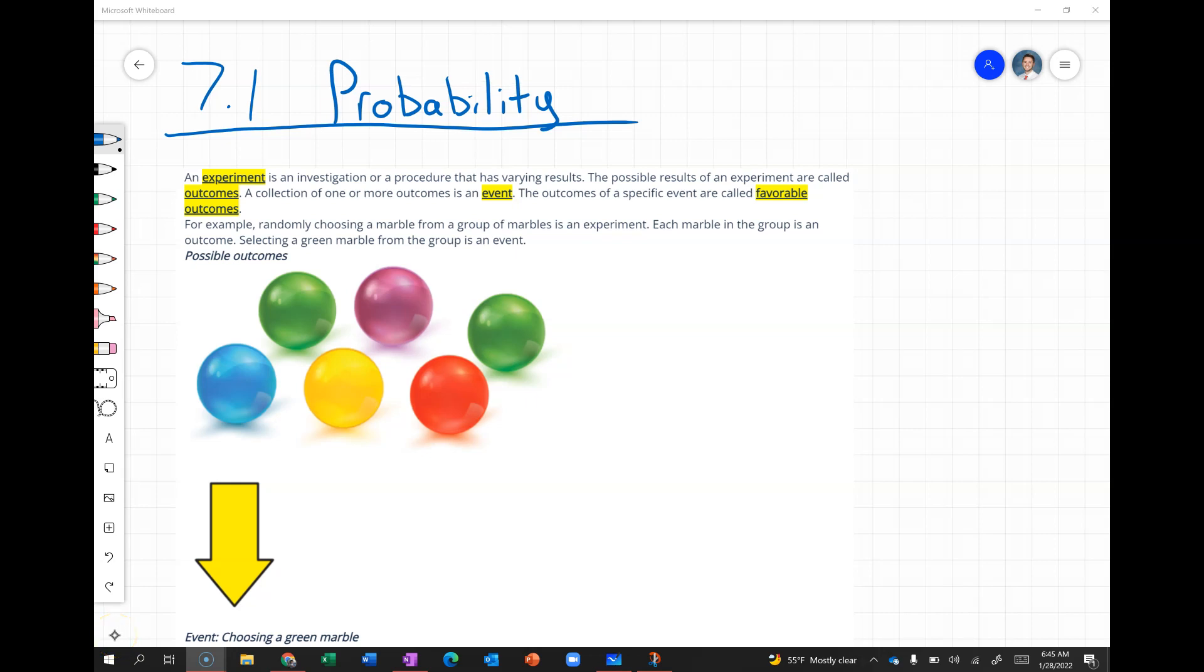In this video we are looking at probability. A couple terms to define: An experiment is an investigation or procedure that has varying results. There can be more than one thing that happens. The possible results of that experiment are called outcomes. A collection of one or more outcomes is an event. Finally, the outcomes of a specific event are called favorable outcomes.